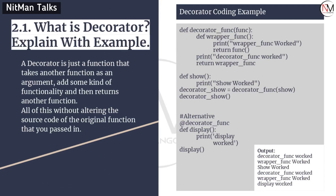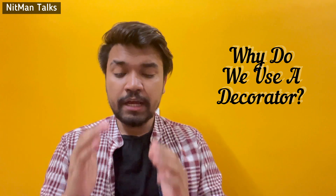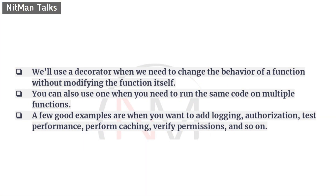Now let's talk about how to create a decorator in code. Before that, we should know why we use a decorator. We basically use a decorator so that we don't have to modify any existing function, but we can add additional functionality to it. We can use it for login purposes, test performance, and more. Once you define a decorator, you can reuse it across multiple functions, which also reduces redundancy — you don't have to write the same code repeatedly.